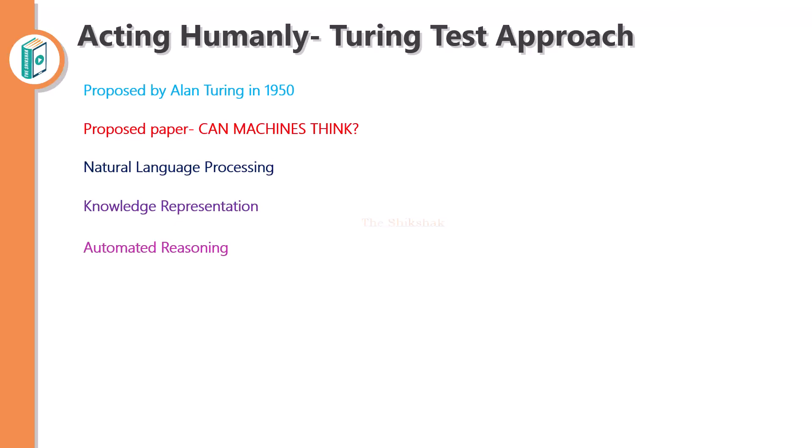The machine will be able to understand a question and give an answer. Also, the machine can draw new conclusions according to the situation, depending on the environment. The fourth capability is machine learning. Machine learning is a study of computer algorithms that improve automatically through experience and by the use of data. It involves implementing computer algorithms inside the machine that can adapt to new circumstances and detect and extrapolate patterns — to judge and assume patterns.